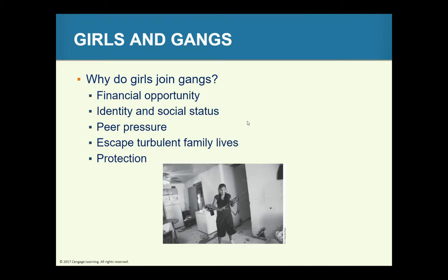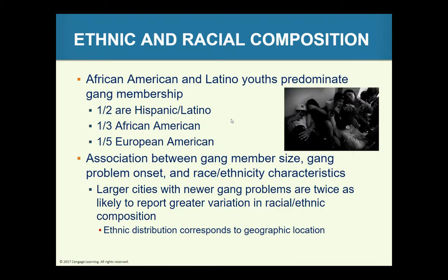When talking about ethnic and racial comparisons, African American and Latino youth are predominant in gangs. One half are Latino, one third are African American, about 10% are European American, and the rest are other races such as Asian. The ethnic distribution of gangs corresponds closely to geographic locations.